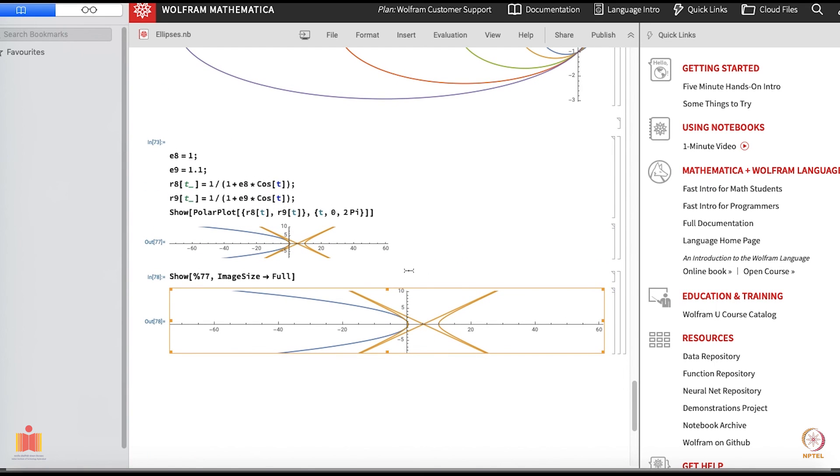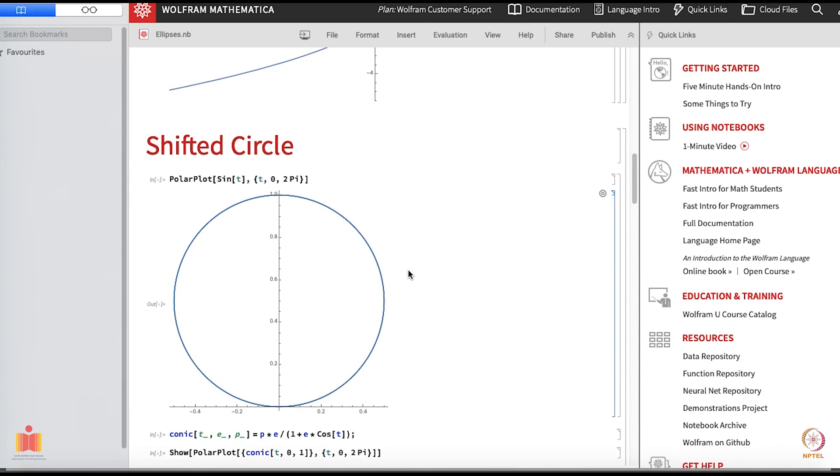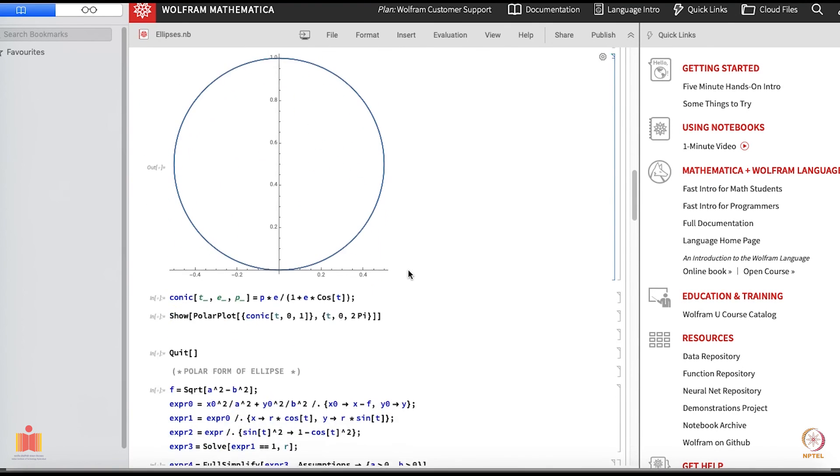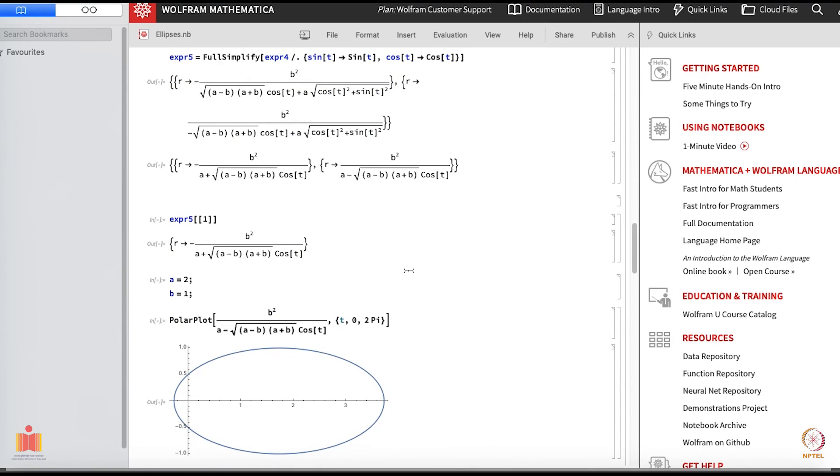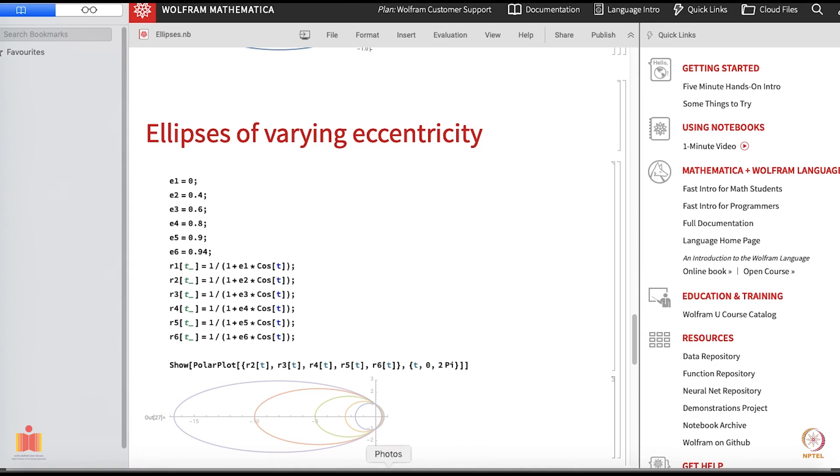Now you know what the form of conic section is in polar coordinates. It is just r equals alpha over 1 plus epsilon cos of theta. That is where we will stop and now we will continue with our capital problem.